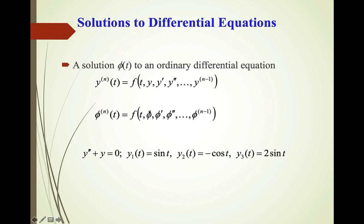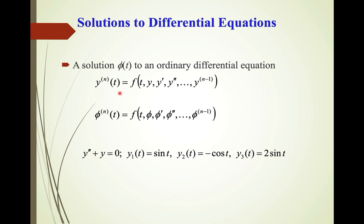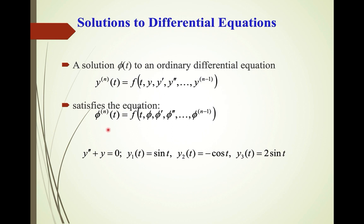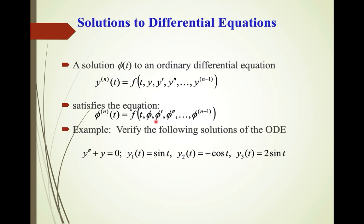So a solution φ(t) to an ordinary differential equation can be written in the following form: you have the n-th derivative and then a function of the independent variables and the derivatives, satisfying the following equation — so the n-th derivative of φ(t) and then the function of the derivatives of φ. Verify the following solutions of the differential equation: this is a 2nd order differential equation; we want to determine if y, y2, y3 are solutions to the differential equation.